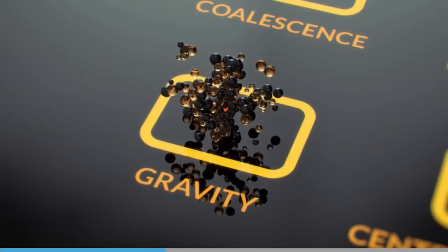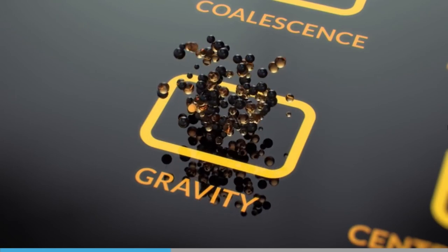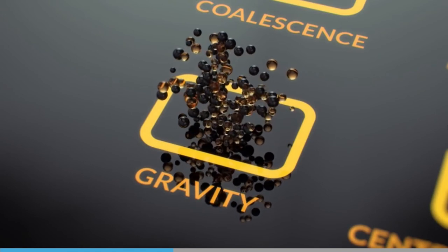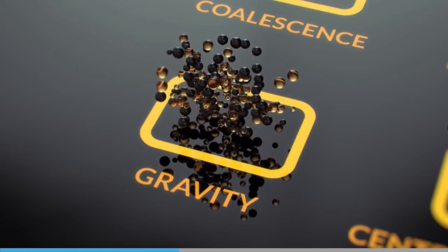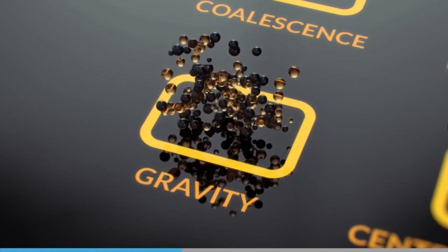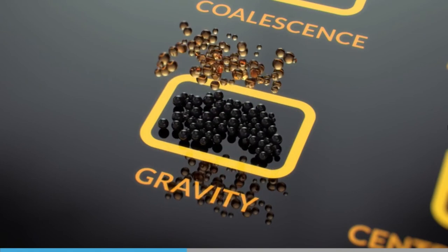Gravity. Nearly all bilge water separators use gravity separation at some point in the bilge water treatment process, even if it is in the bilge tank. Heavy particles, sludge and dirt, sink to the bottom, whilst lighter fractions, oil and scum, float to the top.